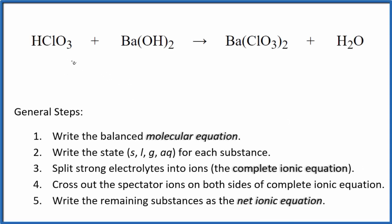To write the balanced net ionic equation for HClO3 plus Ba(OH)2, this is chloric acid plus barium hydroxide, first we need to balance the molecular equation.